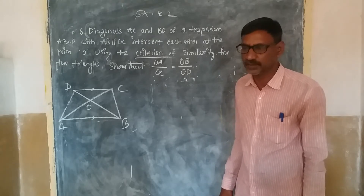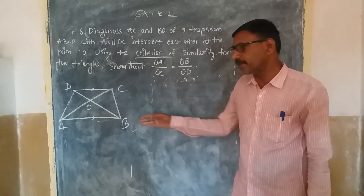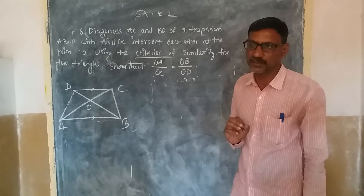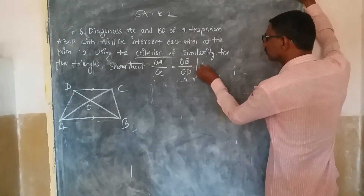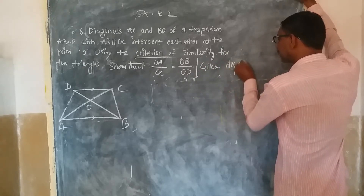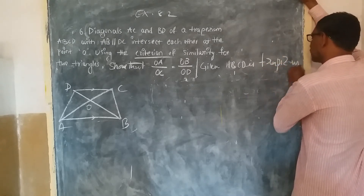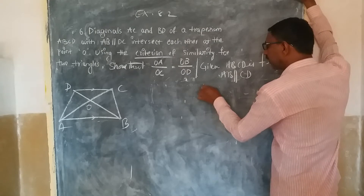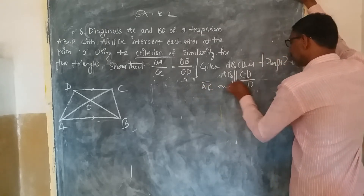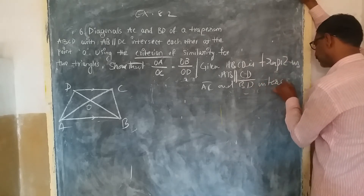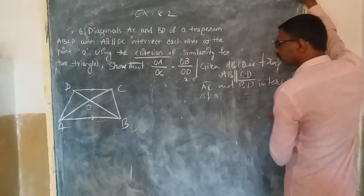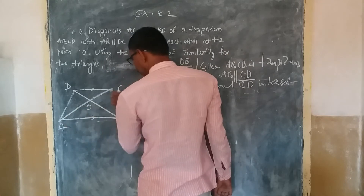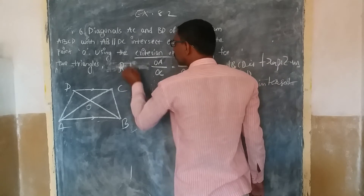It is very simple. Given: ABCD is a trapezium, AB is parallel to CD. Diagonals AC and BD intersect at O. To prove: OA by OC is equal to OB by OD. This is what we need to prove — the RTP. Simple proof.